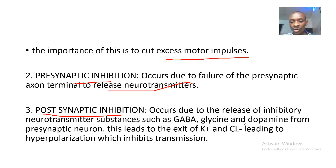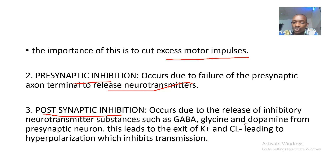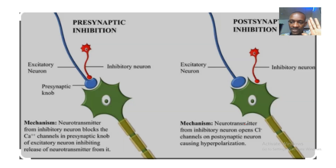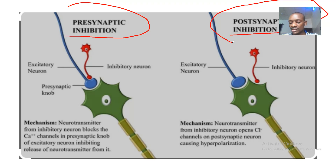Then there is postsynaptic inhibition. This occurs due to the release of inhibitory neurotransmitters such as GABA, glycine, and dopamine from the presynaptic neurons, entering into the postsynaptic membrane. These neurotransmitters are inhibitory and cause postsynaptic inhibition. This leads to the exit of potassium and chlorine, leading to hyperpolarization which inhibits transmission. So those are presynaptic inhibition and postsynaptic inhibition.